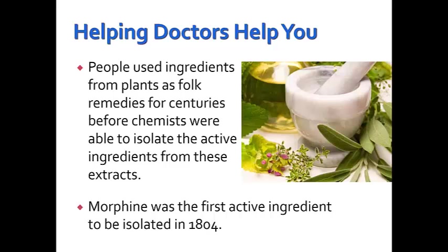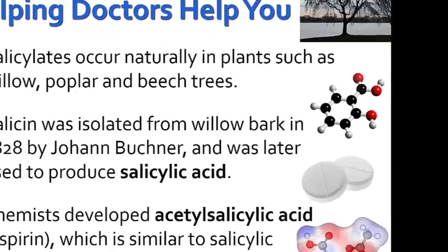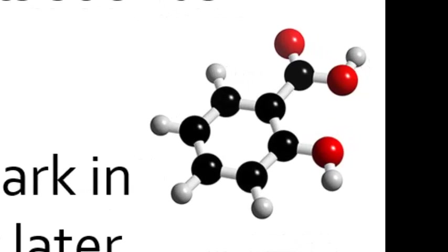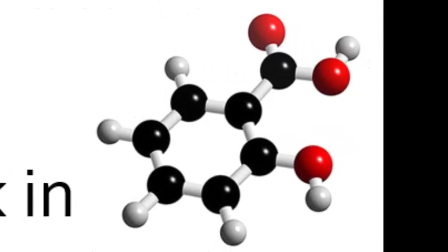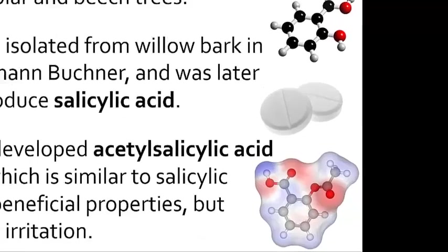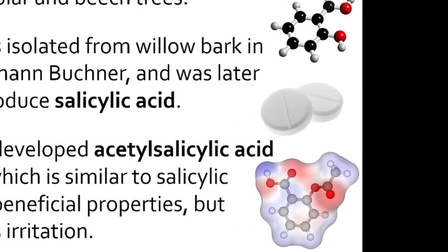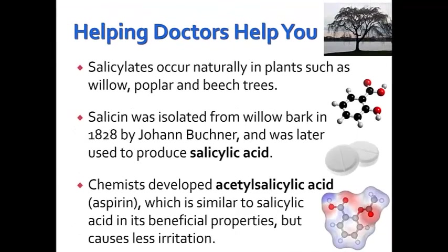Morphine was the first active ingredient isolated, in 1804. Salicylates occur naturally in plants such as willow, poplar, and beech trees. Salicin was isolated from willow bark in 1828 by Johann Buckner and was later used to produce salicylic acid. Chemists then developed acetylsalicylic acid, also known as aspirin, which is similar to salicylic acid but due to its slightly different chemical construction causes less irritation.